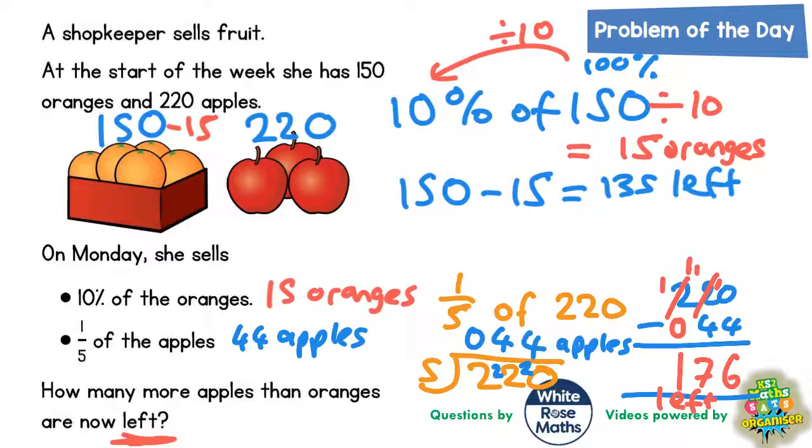But even that isn't the final answer. Because it says how many more apples than oranges are left. We're interested in how many oranges she's got left, which is 135 oranges left.